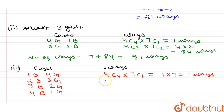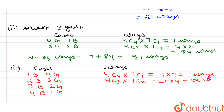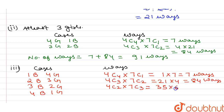For two boys and three girls: 4C3 × 7C2 = 4 × 21 = 84 ways. For three boys and two girls: 4C2 × 7C3 = 6 × 35 = 210 ways.